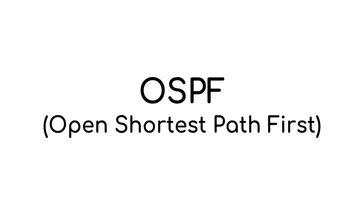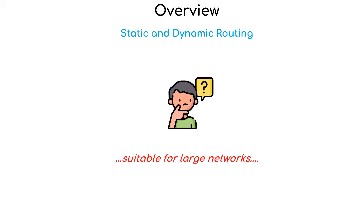Hi guys, hope you are doing well. Today we move to the new topic: OSPF routing protocol. But before we explore what OSPF is and how it works and how to configure it, there are some basic concepts we need to understand. Firstly, we had three kinds of routes: connected routes, static routes, and dynamic routes, and correspondingly we had two kinds of routing: static routing and dynamic routing protocol. In the previous video we explored how to configure static routing, and you know static routing is non-adaptive routing, which means the routes will not change even when something changes in your network.